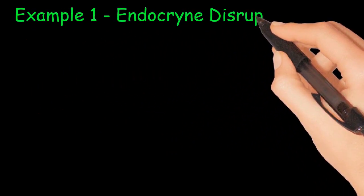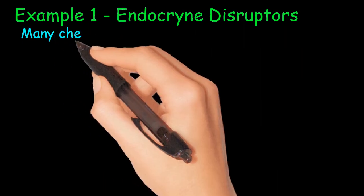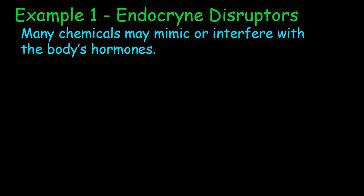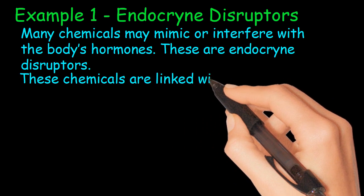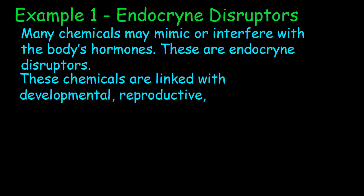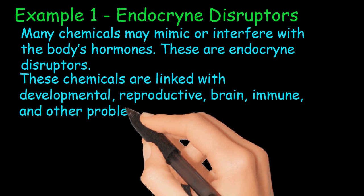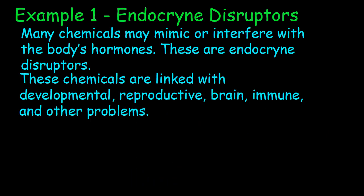Example 1: Endocrine Disruptors. The hormonal system of the body is known as the endocrine system. Many chemicals may mimic or interfere with the body's hormones — these are endocrine disruptors. These chemicals are linked with developmental, reproductive, brain, immune, and other problems. Endocrine disruptors are found in many everyday products like plastic bottles, detergents, and toys. People are exposed to multiple endocrine disruptors at the same time, making it quite difficult to assess the health effects.